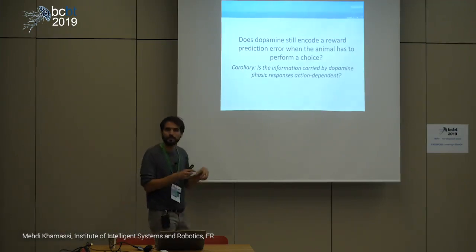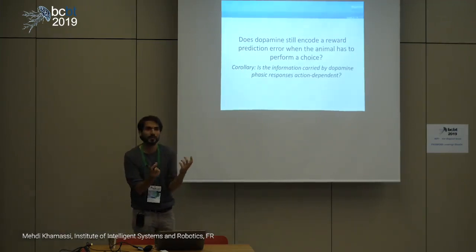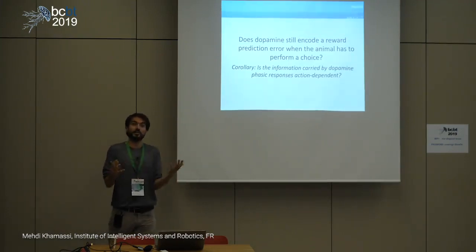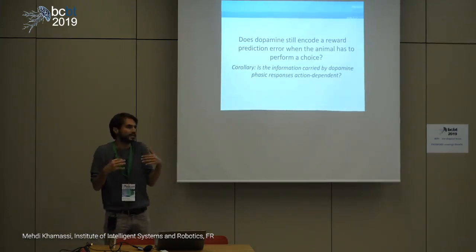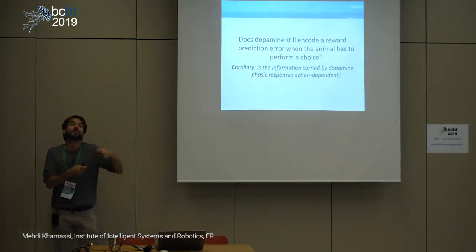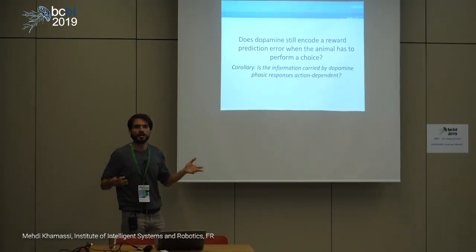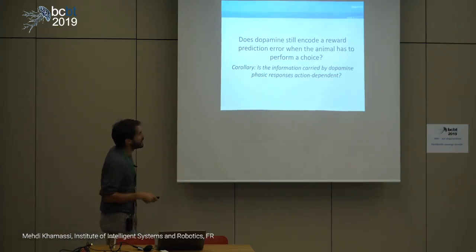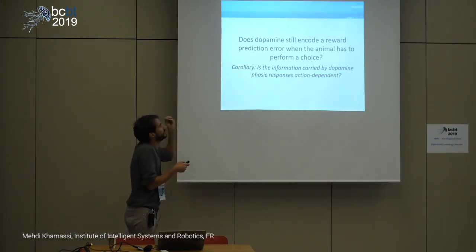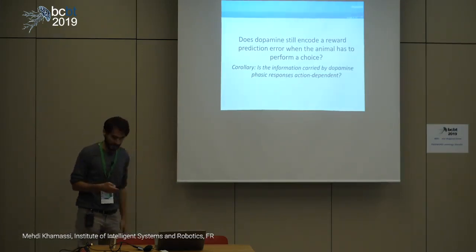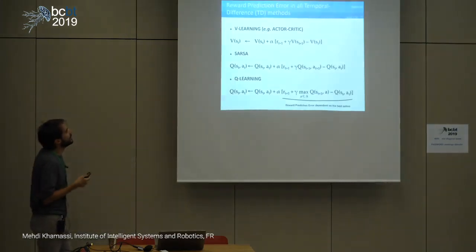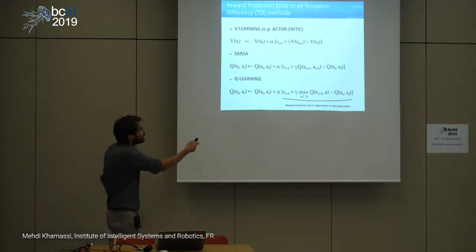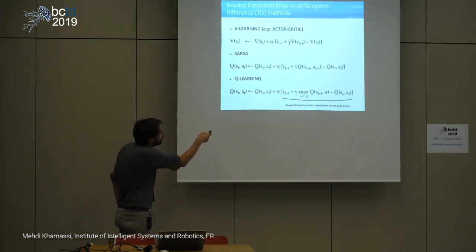We came from temporal difference learning in machine learning, which uses reward prediction errors, and dopamine neurons' phasic activities seem to encode some reward prediction error. But what happens if you introduce actions in the experiment — is the information carried by dopamine phasic responses action-dependent or not? In machine learning, you can distinguish different types of TD algorithms that all share the common structure of reward prediction error.